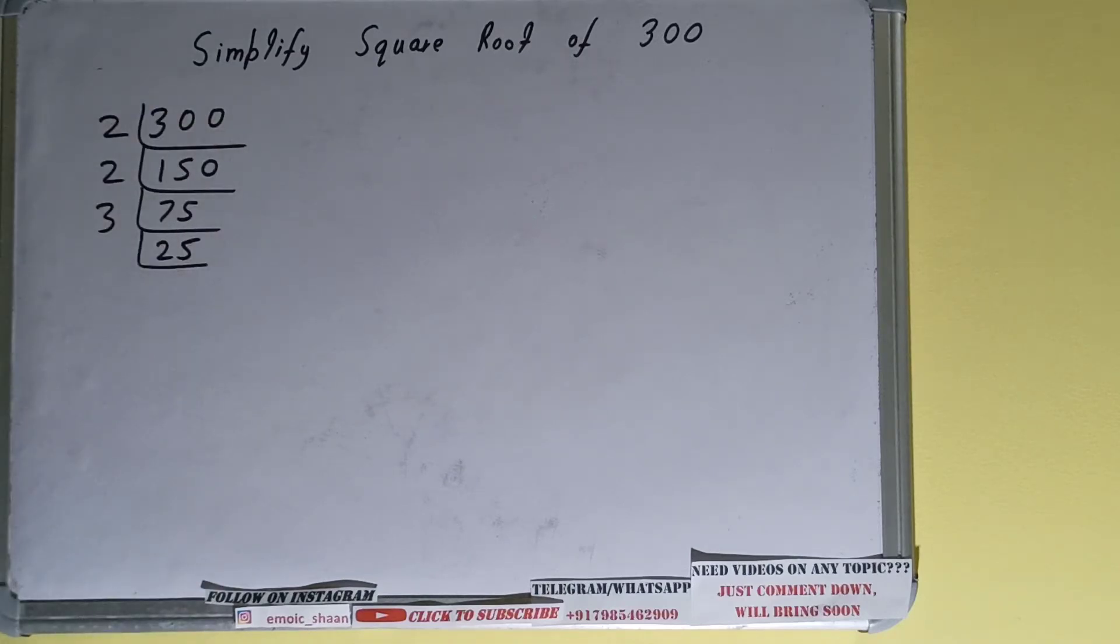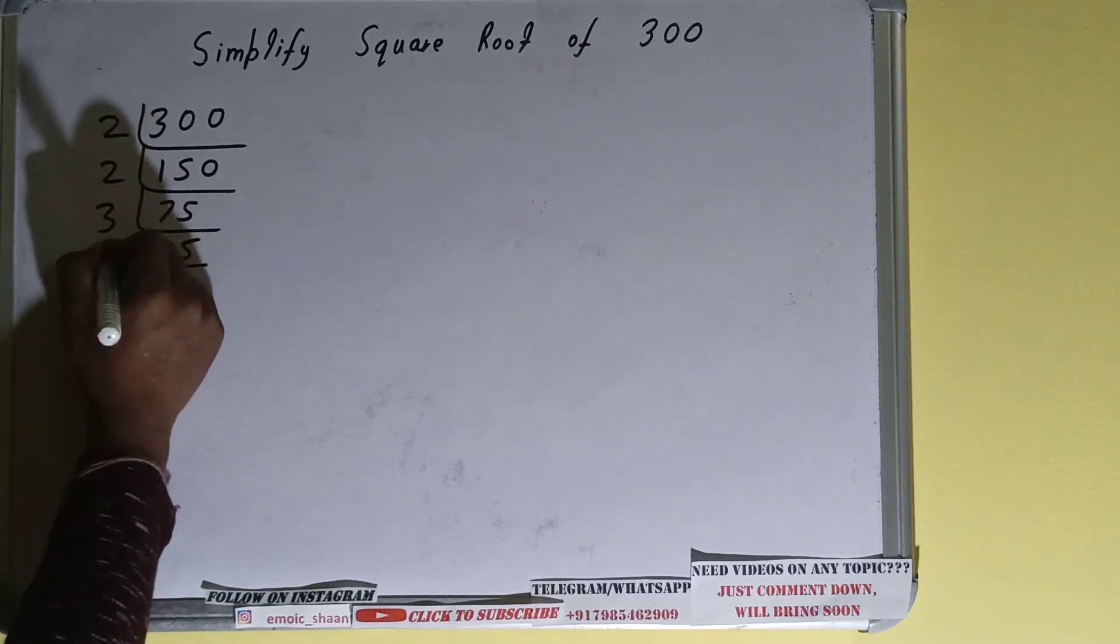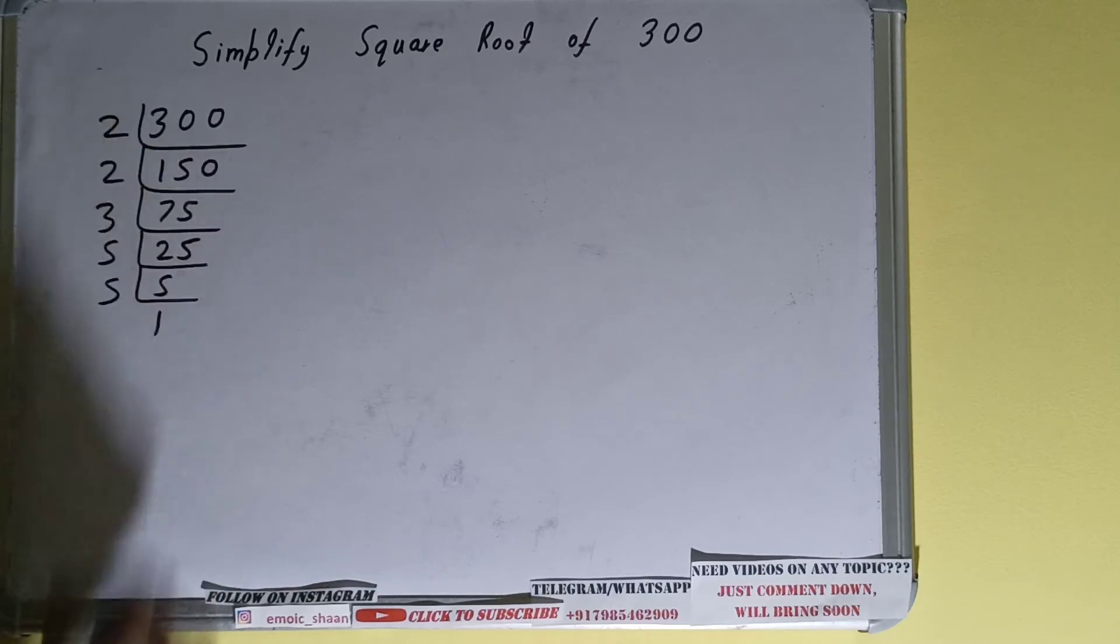So we'll check with the next lowest prime number that is 5. Is 25 divisible by 5? Yes it is, we'll be having 5. 5 is again divisible by 5.